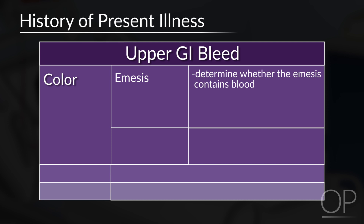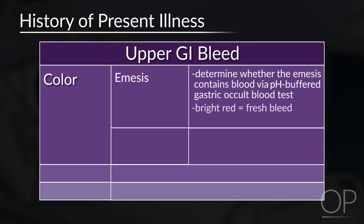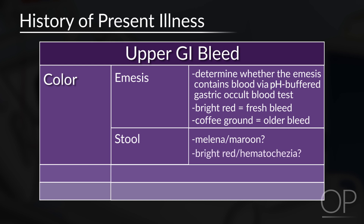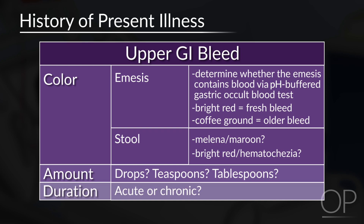While not pertinent to this case, there are parallel questions if you've been called about bloody emesis. For a patient with upper GI bleeding, determine whether the emesis contains blood. Remember, red food coloring, fruit-flavored drinks, vegetables, and some medications can resemble blood. A pH-buffered gastrocult test can identify blood in the vomit. You should also look for the color of the blood in the emesis — bright red blood indicates a fresh bleed, whereas coffee ground emesis indicates older blood. In a patient with upper GI bleeding, it is still important to look at the stool color for melena versus maroon-colored stool versus bright red blood or hematochezia. You should also assess the amount of blood — for example, drops versus teaspoons versus tablespoons. Again, always assess the duration of symptoms to see if there is an acute or chronic problem.